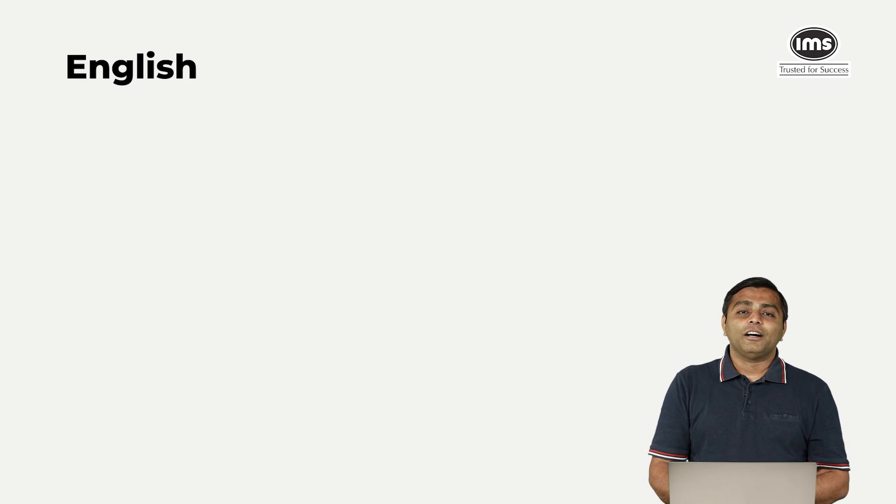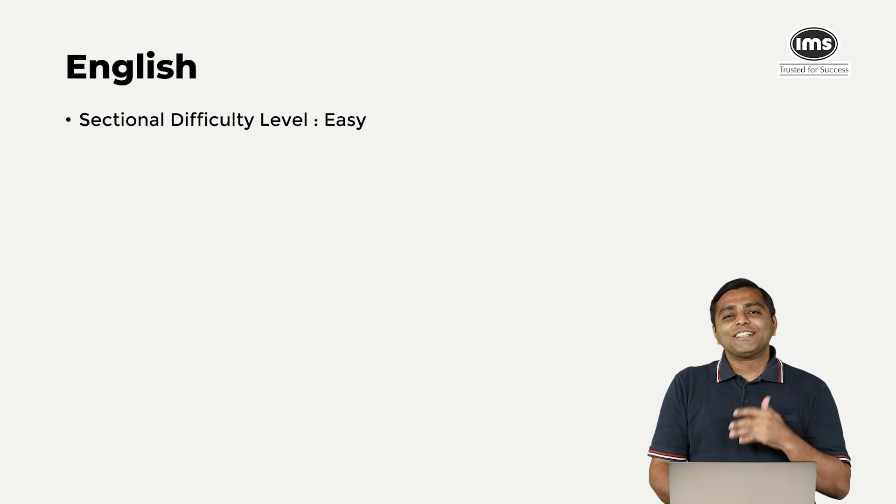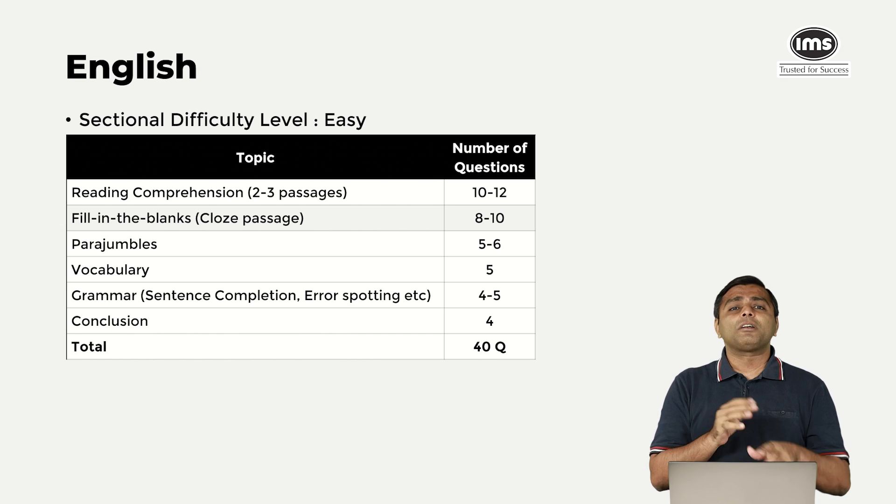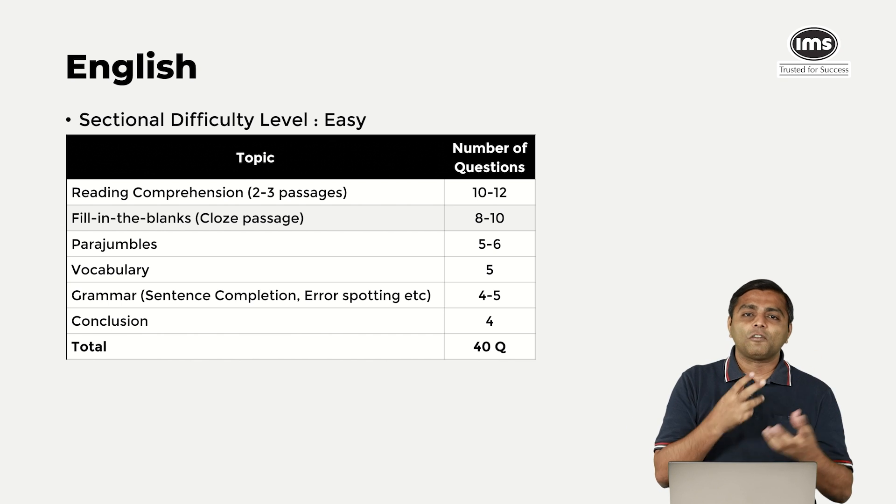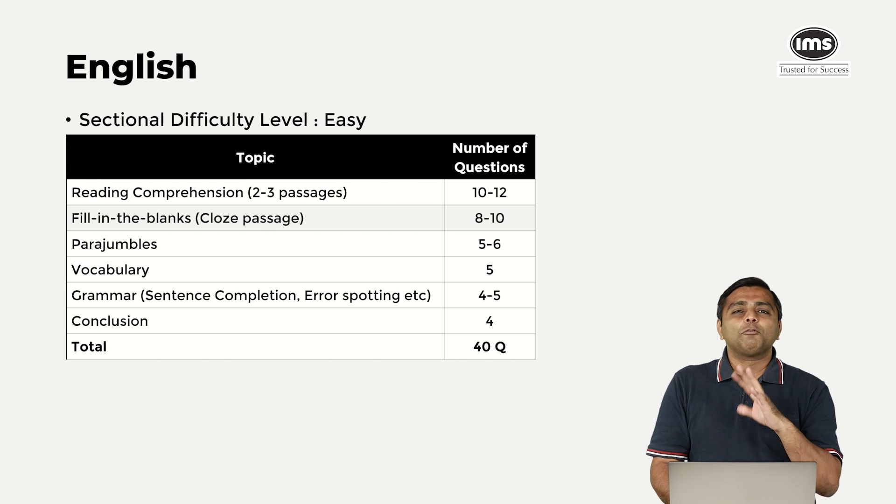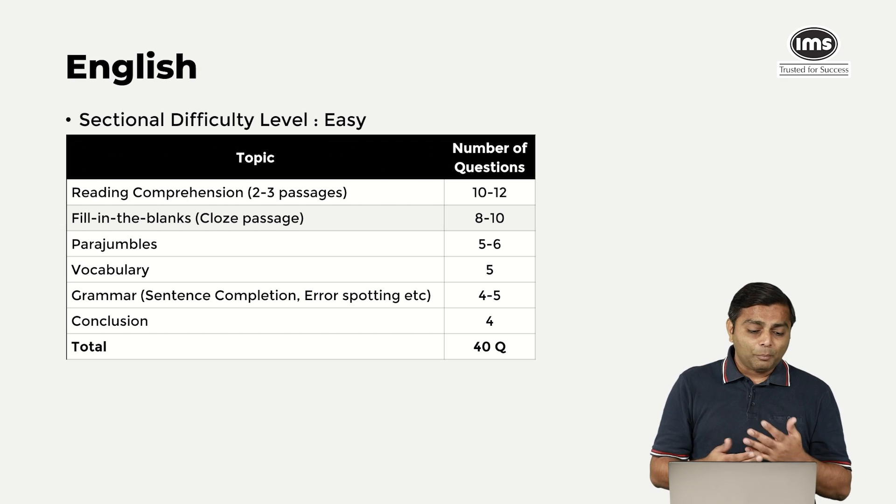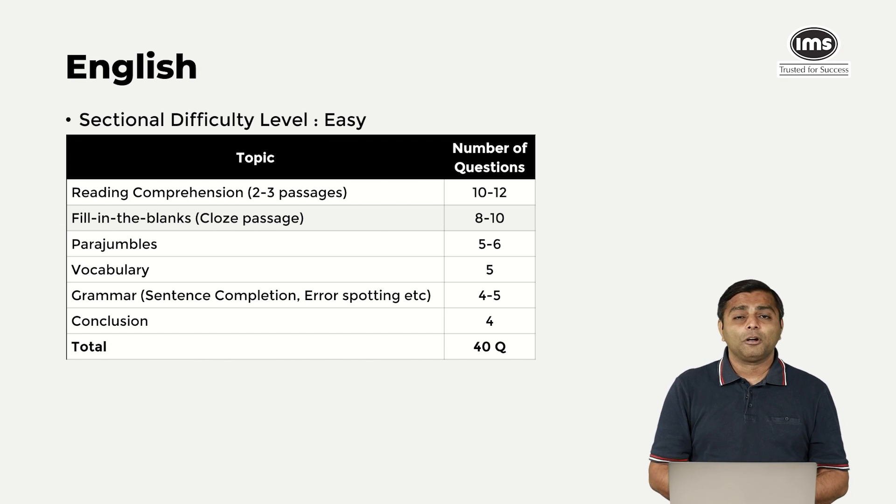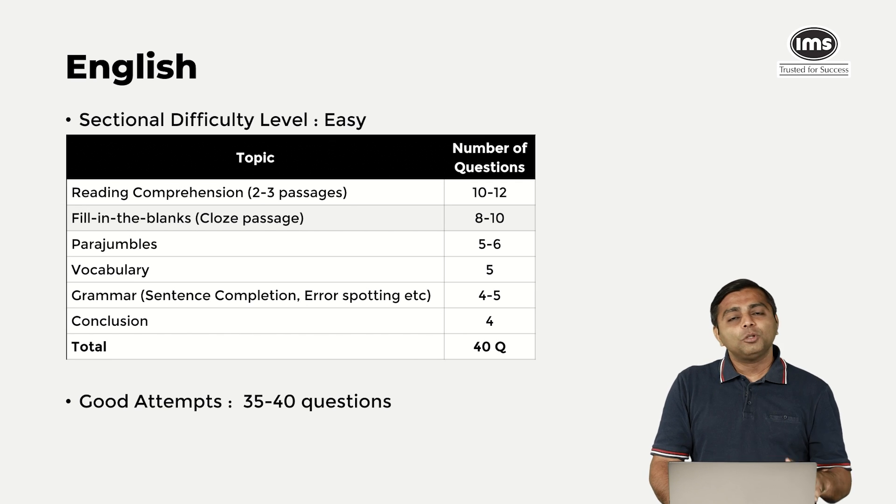Moving on to the next section, English or verbal, as always and has been for years, the section is easy this year also. The RC, there are 2 to 3 passages around 10 to 12 questions, and very simple, direct questions, not really focusing on very indirect questions, the tone of the passage, and the author agrees with everything except those kind of questions are not seen. Easier level questions are seen, more direct, more fact-based questions are seen. Fill in the blanks, cloze passages, generally students have reported that they have seen two passages each having 4 to 5 blanks there. Para jumbles again normal. Vocabulary, a big thing. Topics like vocabulary, even grammar, even conclusions, you will be able to get your way through all of this if you are strong with your vocab. So RC, grammar, vocab, I think that should do the trick for English.